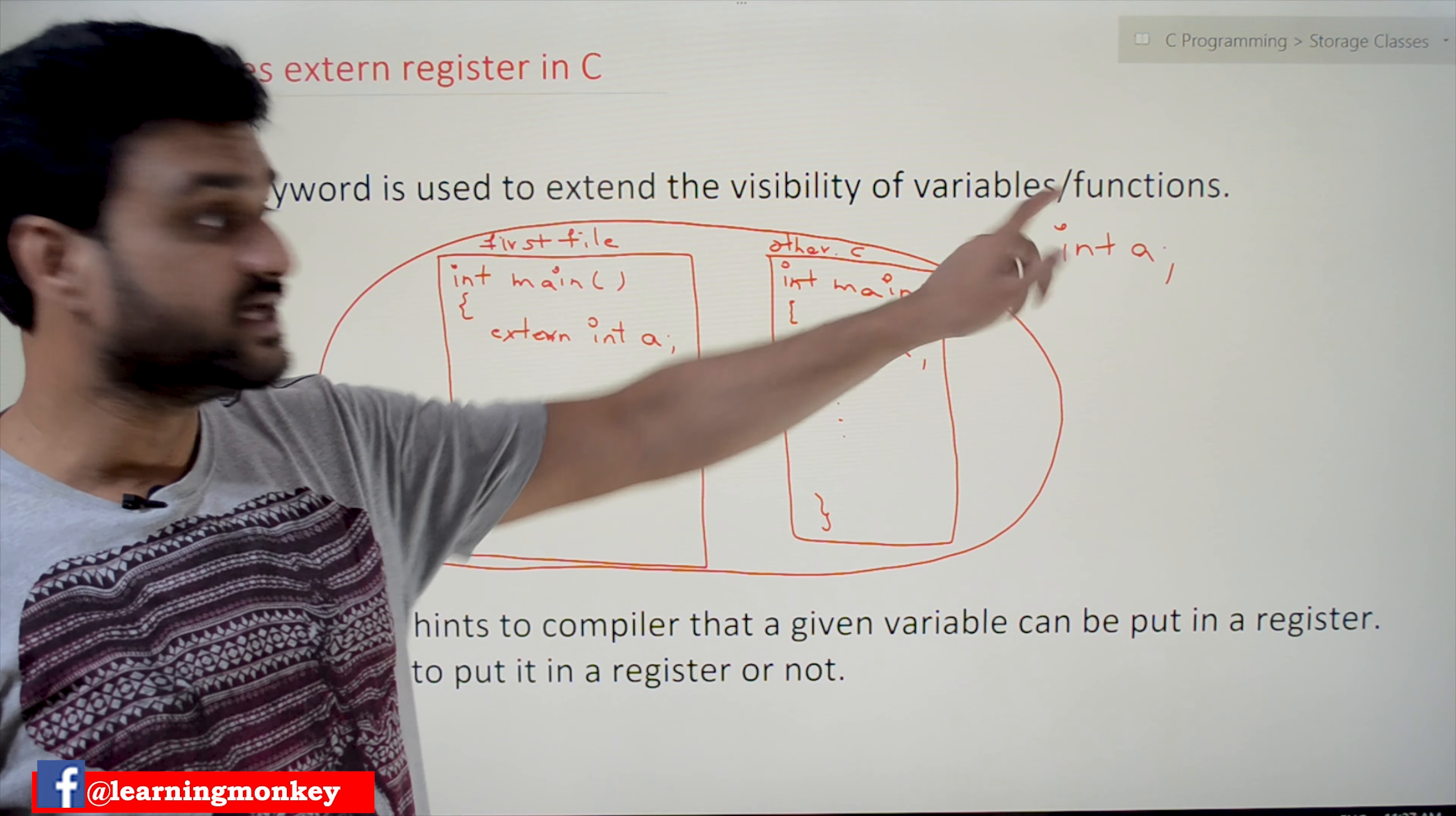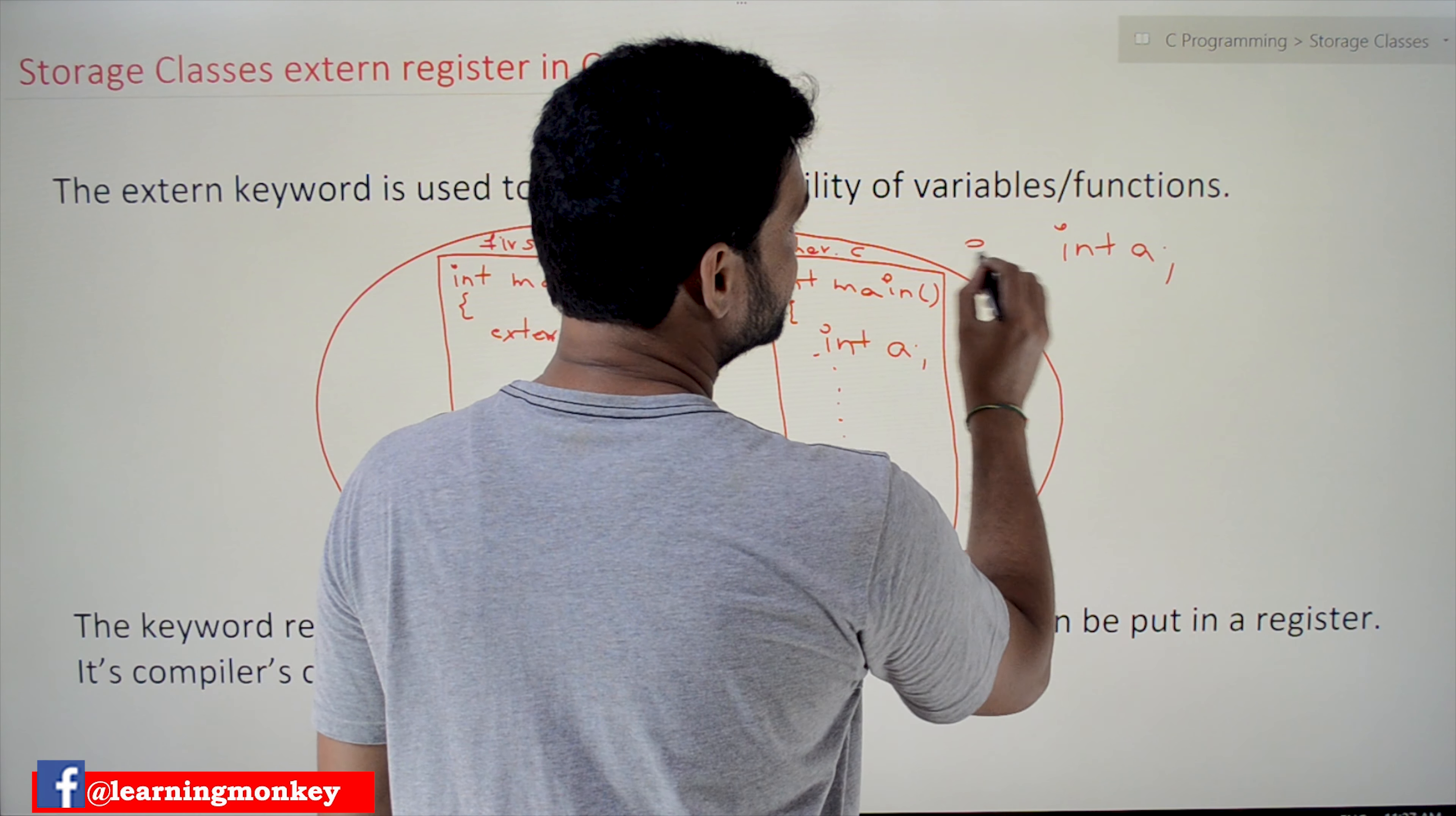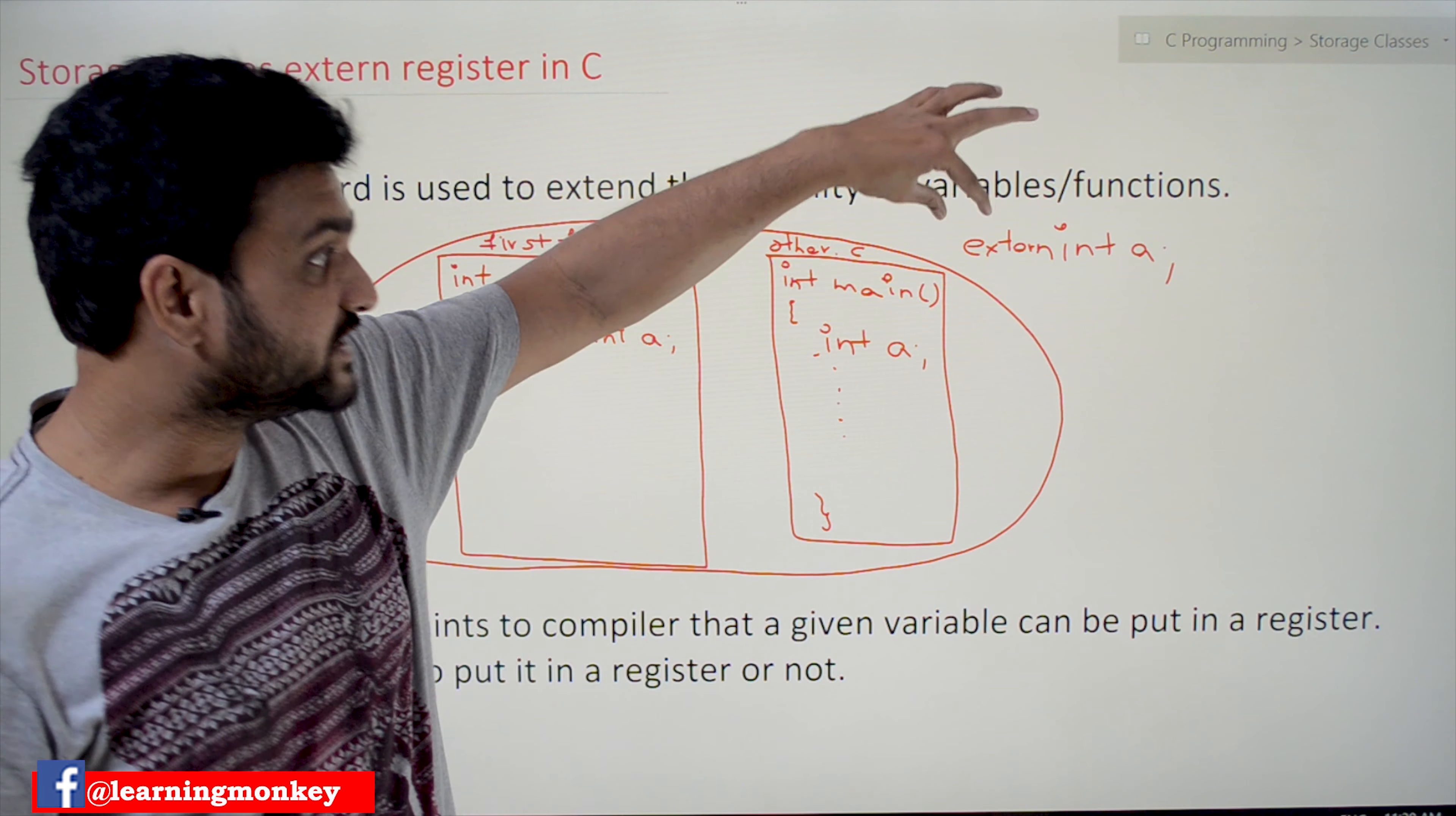For example, if you have given int a, what happens is it is defined. Defined means the memory location for that variable will be assigned. Declaration means just the compiler knows that there is a variable called a but the memory will not be allocated. So int a or any data type with the variable name means it is defined. What happens with extern is if you add extern to it - extern int a means it is not defined, it is just declared. The definition is already made elsewhere and we want to use it just as a declaration.